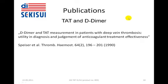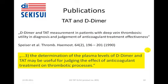Often I'm asked about the relation between TAT and D-dimer. A publication by Spicer et al. in 1990 analyzed D-dimer and TAT in patients with deep vein thrombosis and their utility in diagnosis and judgment of anticoagulant treatment effectiveness. The major conclusion was that determination of plasma levels of D-dimer and TAT may be useful for judging the effect of anticoagulant treatment on thrombotic processes.